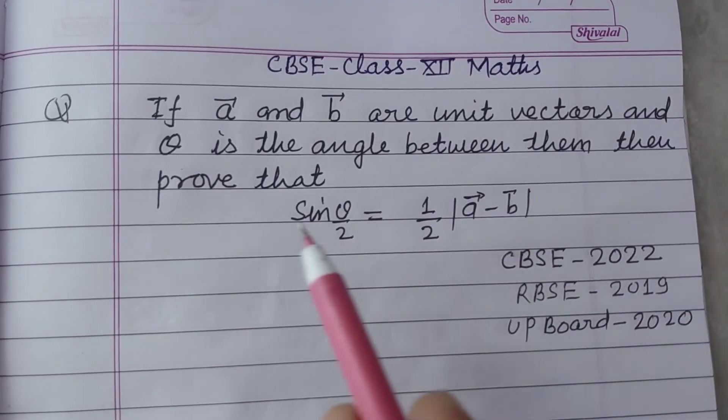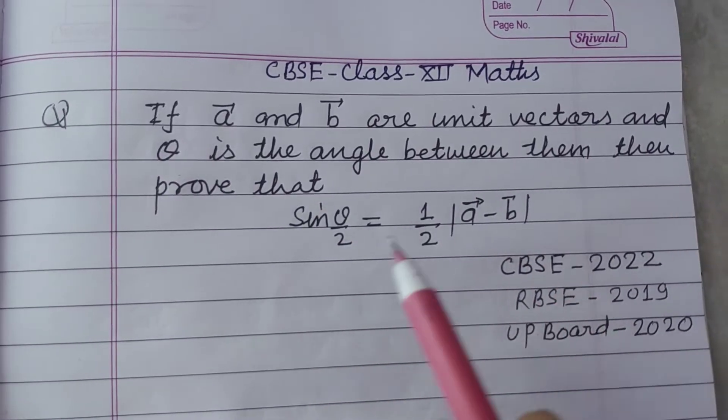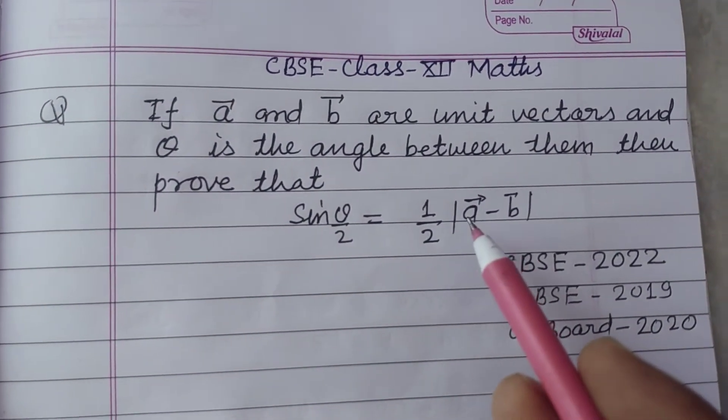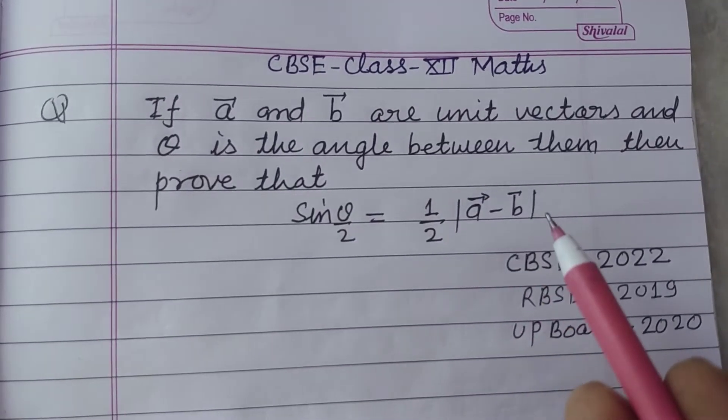If A and B are unit vectors and theta is the angle between them, then prove that sin theta by 2 equals 1 by 2 mode of A minus vector B.